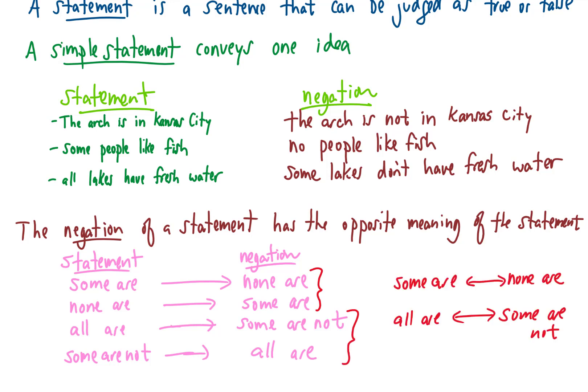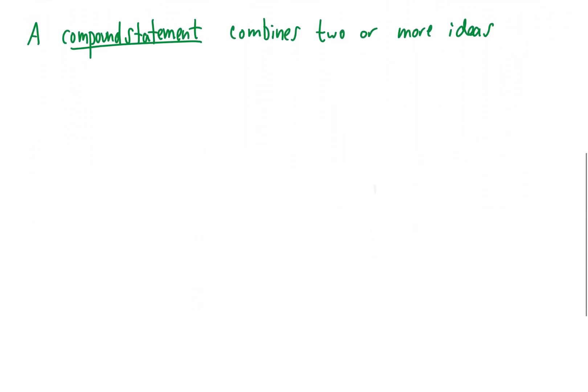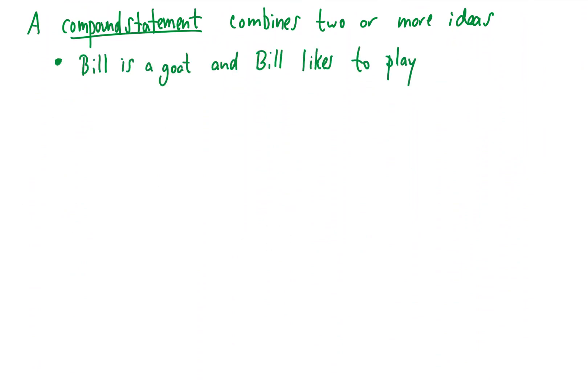We can summarize all of these rules about statements and negations with those two pairings. Moving on, the next thing to define is a compound statement. A compound statement combines two or more ideas. For example, 'Bill is a goat and Bill likes to play' is two simple statements combined. There's this 'and' connecting these two statements that we'll talk about in a minute.